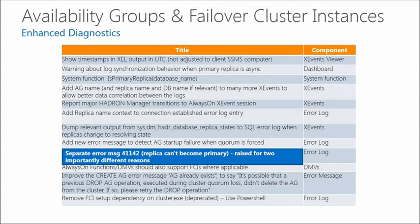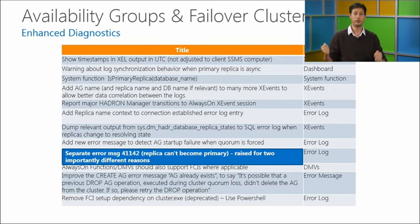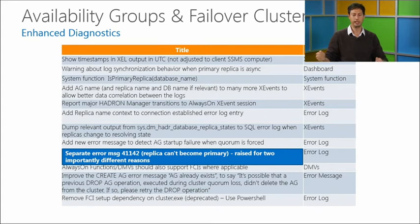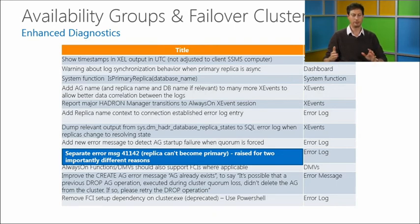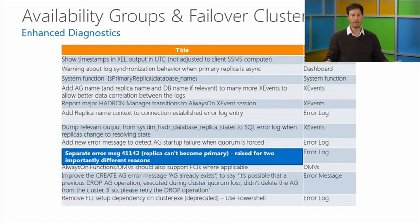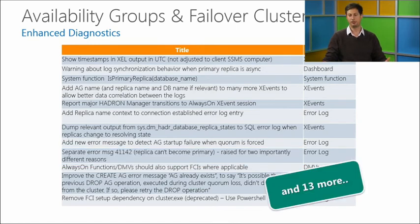We're outputting additional detail into the error log every time a replica changes state — such as the last transaction sequence number committed and the last commit time — so DBAs using the error log can quickly correlate between replicas and identify which is closest to the primary. We're also separating error messages that had multiple root causes into distinct errors. For example, an error about a secondary failing to become primary previously had two possible causes: the replica wasn't synchronized to avoid data loss, or it was started in forced quorum mode. Now those are separate error messages. There are 13 more enhancements beyond these examples.